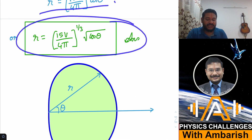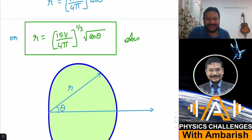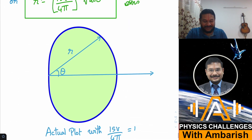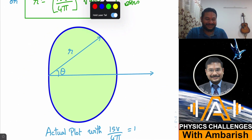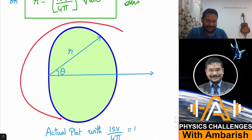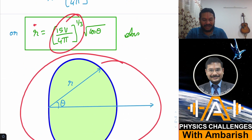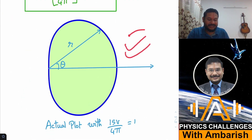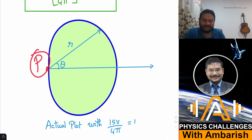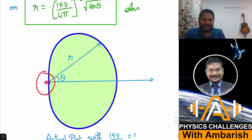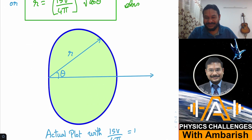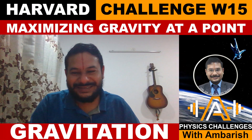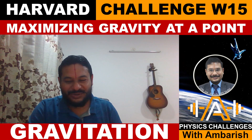To give an idea of the exact shape, I plotted r = √cosθ in Mathematica with constant a = 1. The resulting shape is precisely the shape I had been drawing throughout the problem — confirming the answer. This is the shape of the required solid, and the origin O is the point where the gravitational field is maximized.